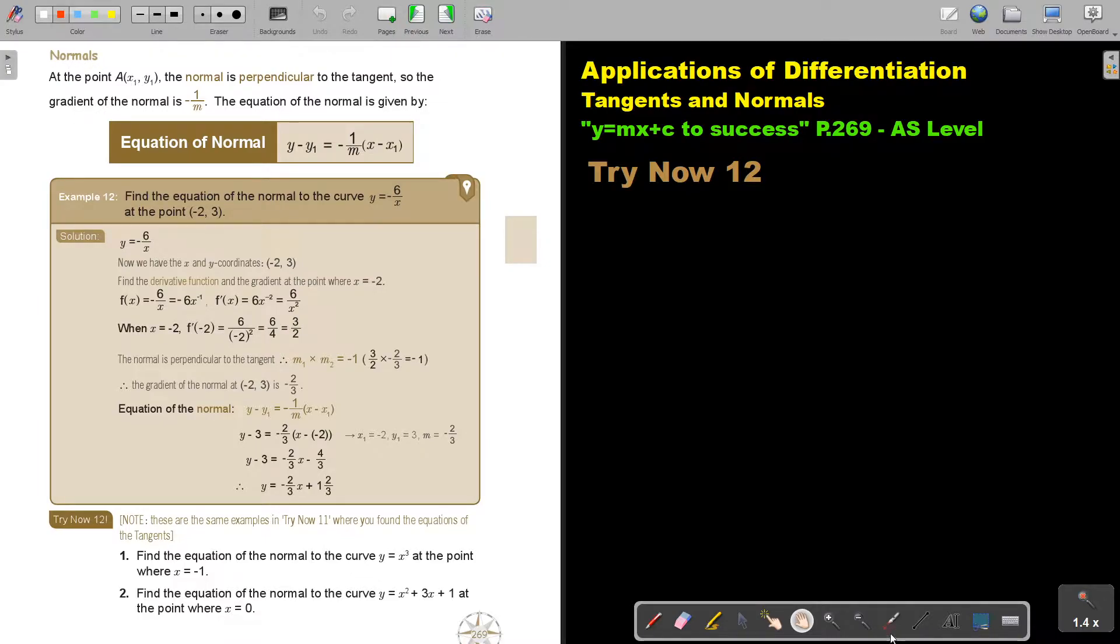Normals. At the point A, where it touched the curve, the normal is perpendicular to the tangent. So the gradient of the normal is the perpendicular with the sign change and the reciprocal of M, so negative 1 over M. The equation of the normal is then given by this.